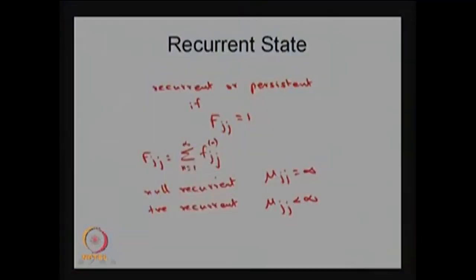Whenever a state is called a recurrent state, the probability of ever entering state j starting from state j is certain (probability 1). A recurrent state is called null recurrent if the mean first passage time, mean recurrence time, or mean return time is infinity. If that is a finite quantity, the recurrent state is called a positive recurrent state.